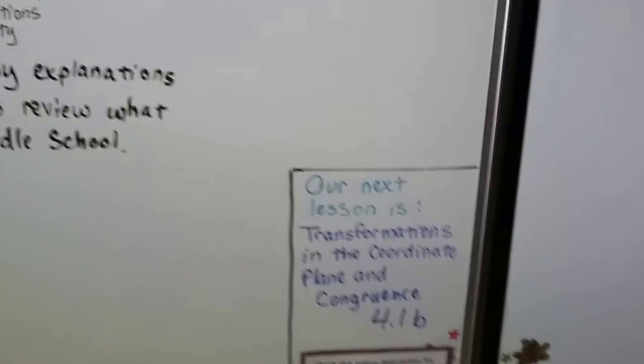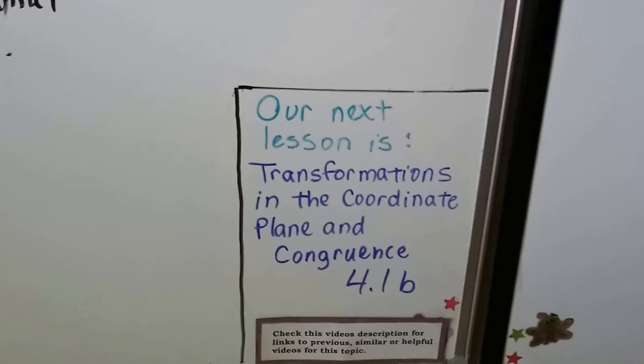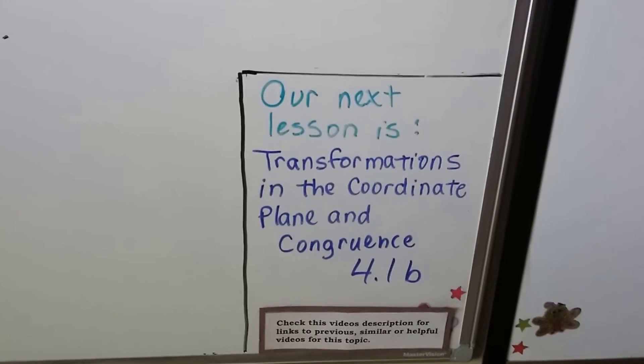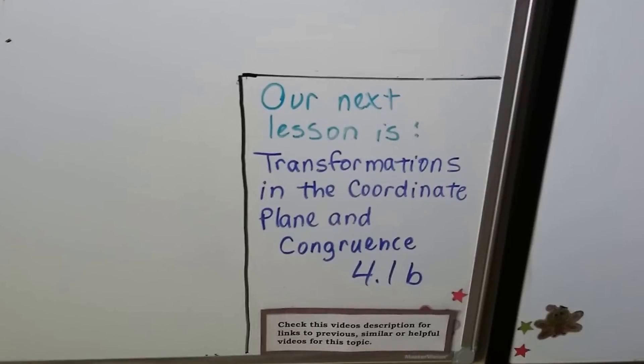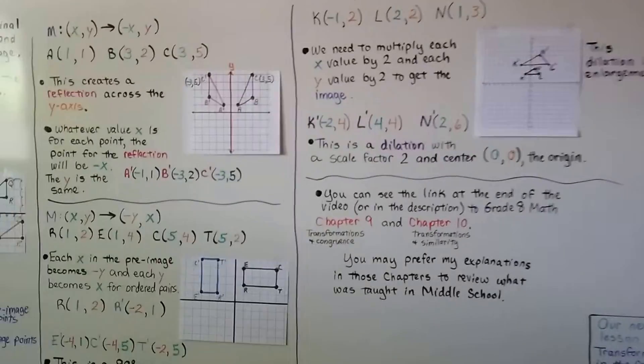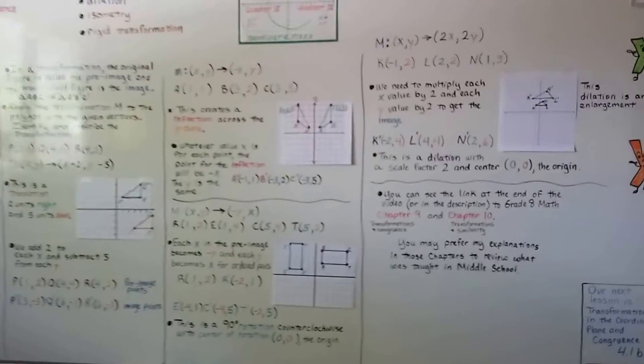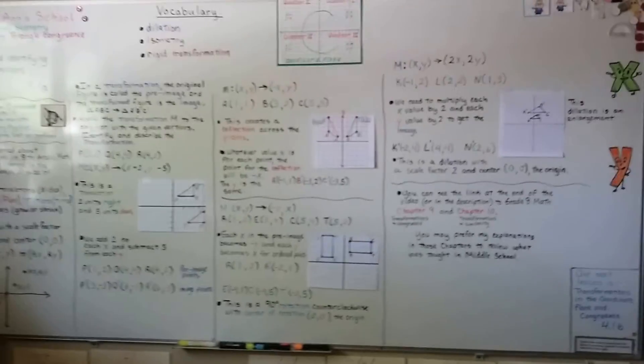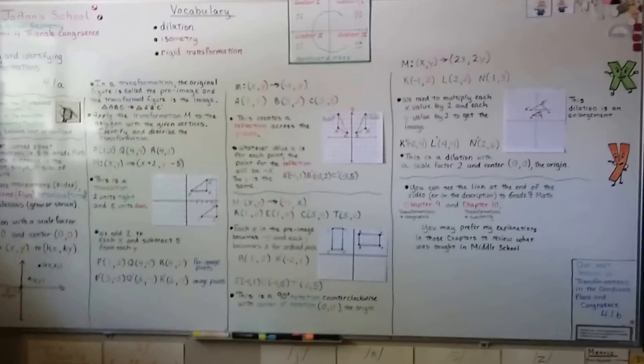So our next lesson is transformations in the coordinate plane and congruence. It's going to be 4.1b. We're also going to talk about isometry and rigid transformations. So I hope this was a good explanation and I will see you next time. Keep your chin up. I'm proud of you. Bye.